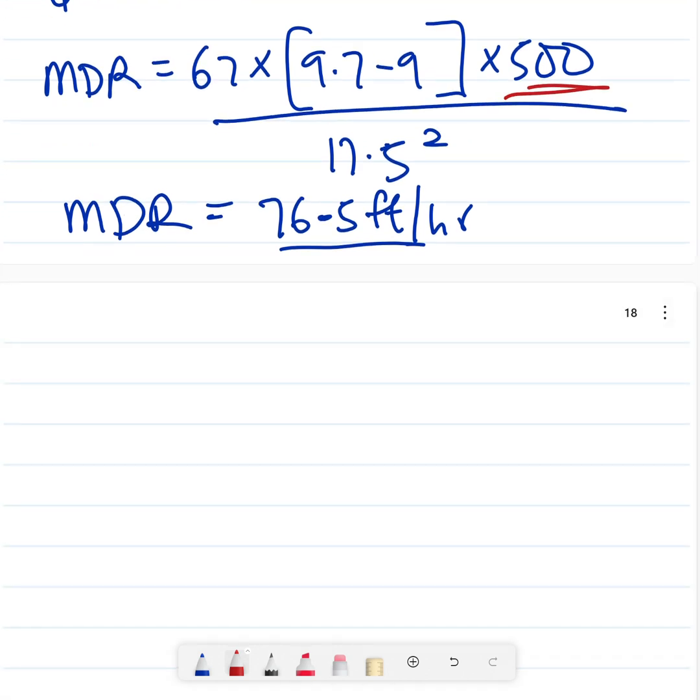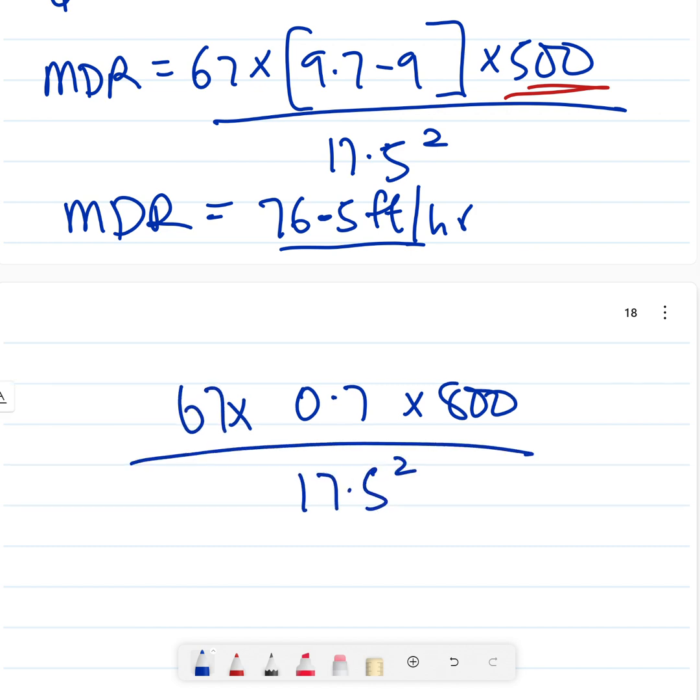If you plug in this equation and say your flow rate becomes 800 gallons per minute, 800 times 0.7 times 67 all over 17.5 squared for the same hole, you'll notice that your MDR automatically increases and becomes 122 foot per hour.